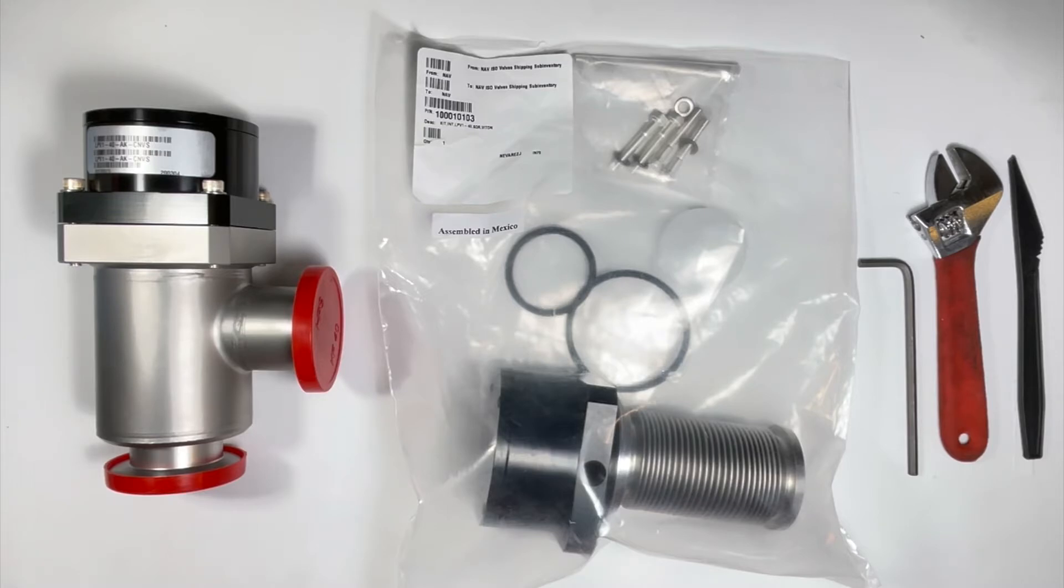The internal replacement process quickly returns a valve to an as-new state and should be part of a regularly scheduled maintenance cycle. It is most easily done with the valve removed from a vacuum system, but can also be done while the valve is still installed.